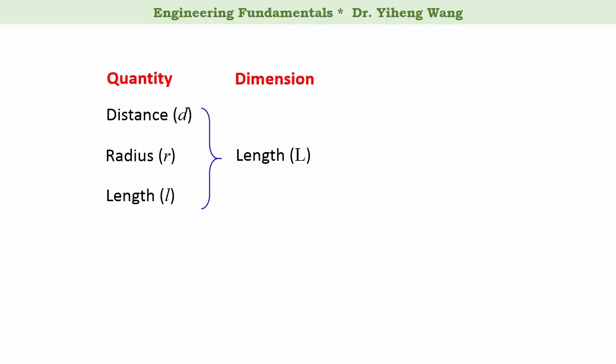Depending on the measuring tool we use, we will be able to record a value for the quantity that we are interested in. For example, we can use a measuring tape to measure the distance between two poles and get a number of 37. We can use a ruler to measure the radius of a circle and get a number of 4.8. And we can use a yardstick to measure the length of a small disk and get a number of 26.5. Obviously, these numbers alone don't mean much unless they are given in appropriate units.